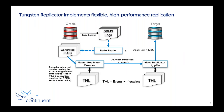There are situations where we do have to break that model, just because of the data or the environment into which we're applying — but those are outside normal operation for typical replication. In terms of extracting the data from Oracle, we extract the information from the Oracle redo supplemental logs directly through what we call the redo reader. That generates the information into a separate format called the THL file — the Transaction History Log.